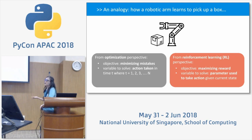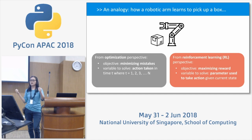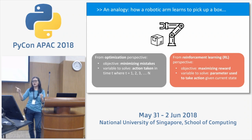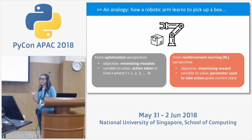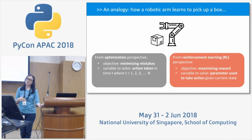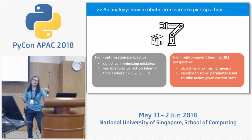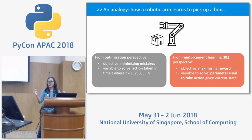In reinforcement learning, you simply teach the robotic arm to pick the box. If the box is on the left but the arm moves right, you tell it that's wrong — move to the left. That's the basic idea. Now think of the robotic arm as the daily budget allocation decision marketers must take — allocating budget each day until end of month to optimize their KPI.